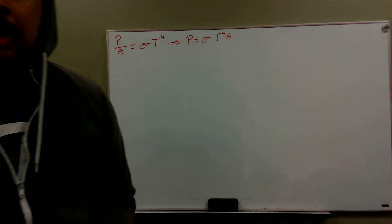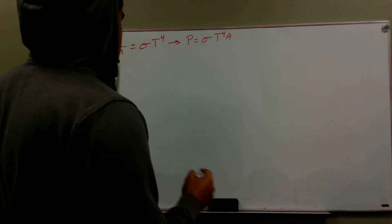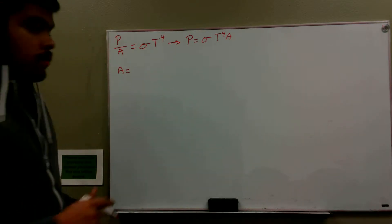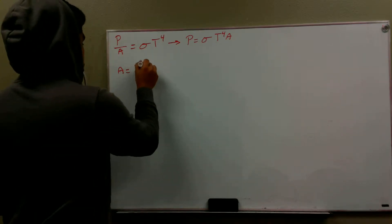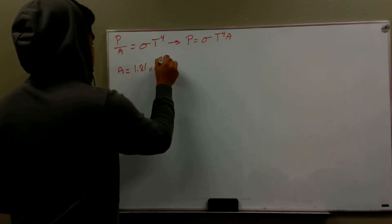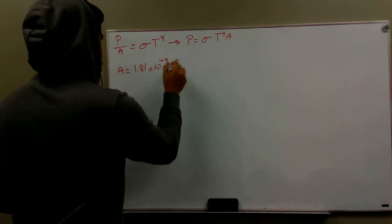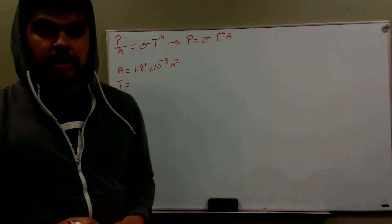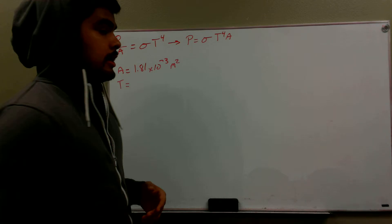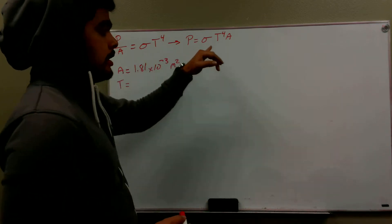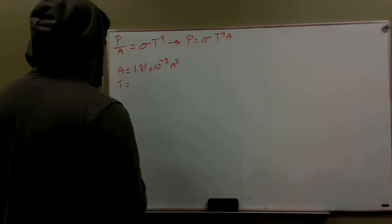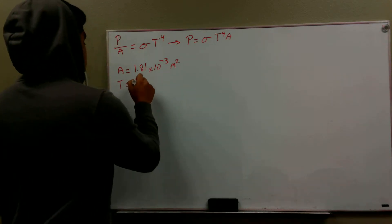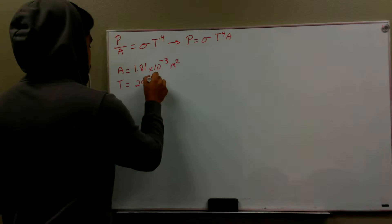Now this is a two part problem, let's start off with the first one, a basketball. For this one we know that our surface area is 1.81 times 10 to the minus 3 meters squared. We have our temperature, which is given to us as 20 degrees Celsius, but our units in sigma have Kelvin, so this needs to be in Kelvin. 20 Celsius is the same thing as 293 degrees Kelvin.